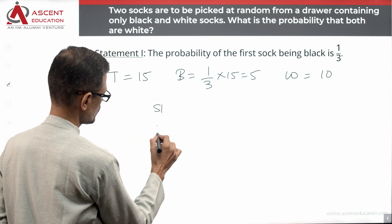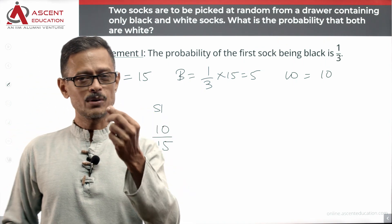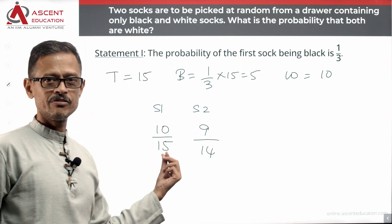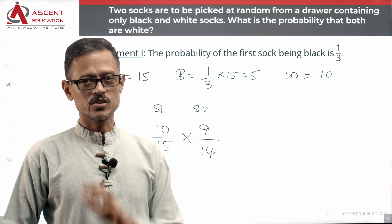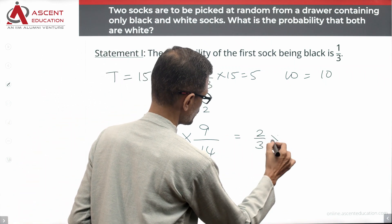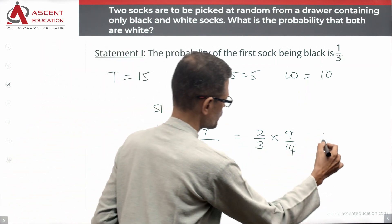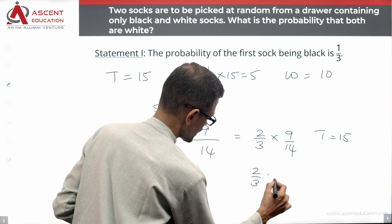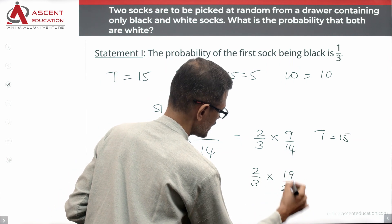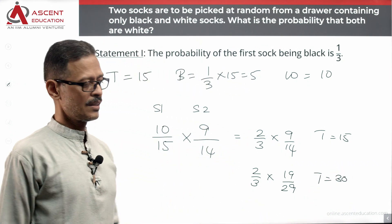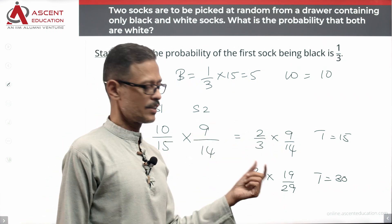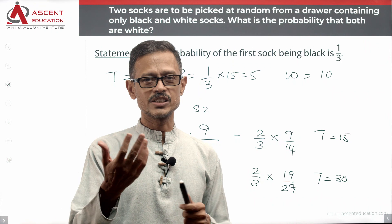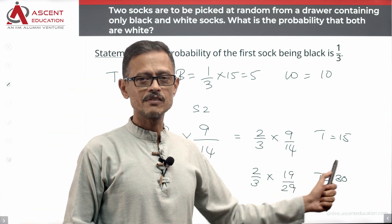The probability that sock 1 is white is 10 by 15. After removing one white sock, there are 14 socks remaining and 9 are white. So the probability that both socks are white is 10 by 15 into 9 by 14, which simplifies to 2 by 3 into 9 by 14. Comparing: when total socks is 30, the answer is 2/3 into 19/29; when total socks is 15, the answer is 2/3 into 9/14. Since 9/14 is not the same as 19/29, we get different answers for different values of the total number of socks.